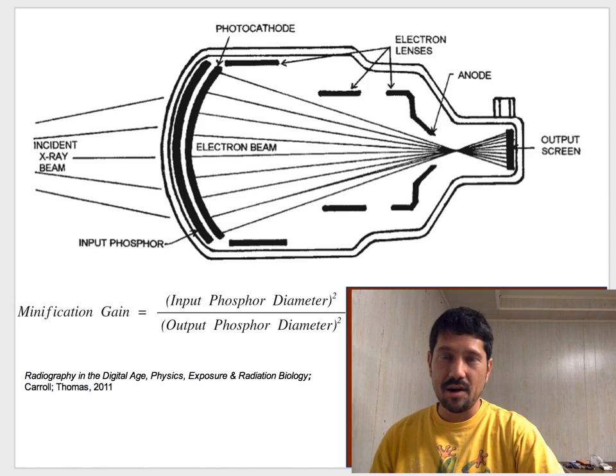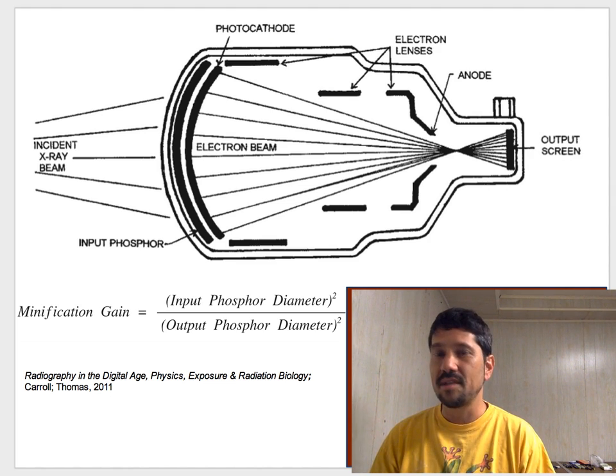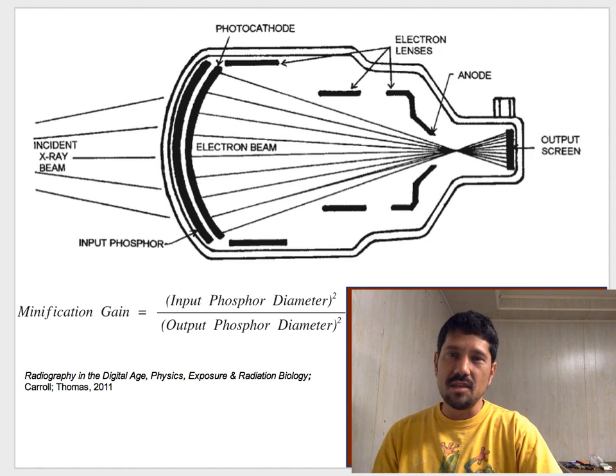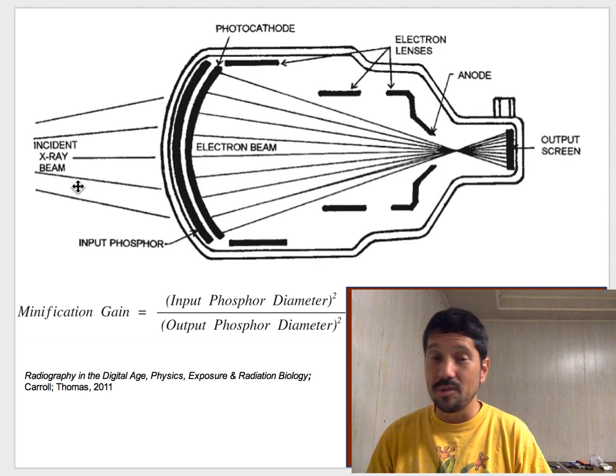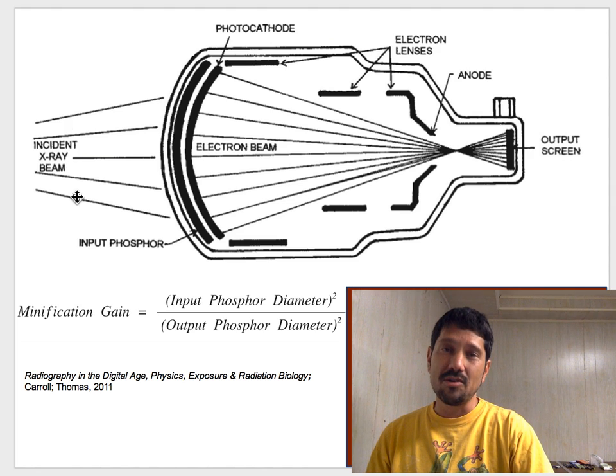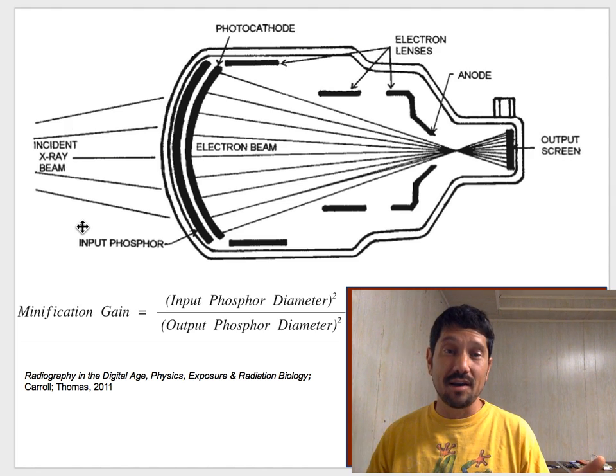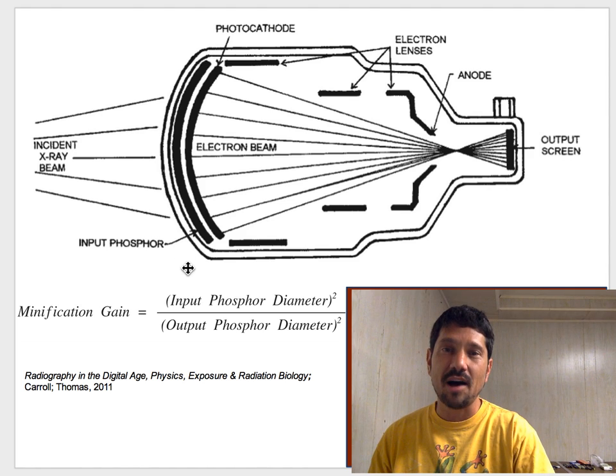So here is our image intensifier courtesy of Quinn Carroll, one of the textbooks I use. You see that you have your incident ray diverging, so let's start with the tube. The X-rays come out of the tube, they go through the patient, and they are diverging, so they are magnifying the anatomy of interest, and here the first thing they hit is this input phosphor.